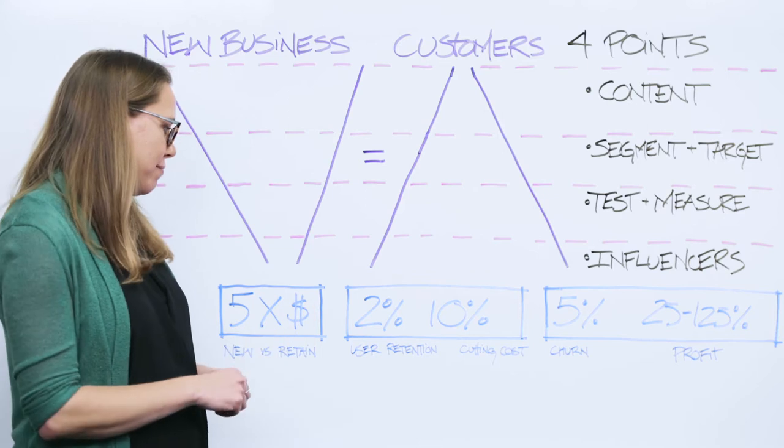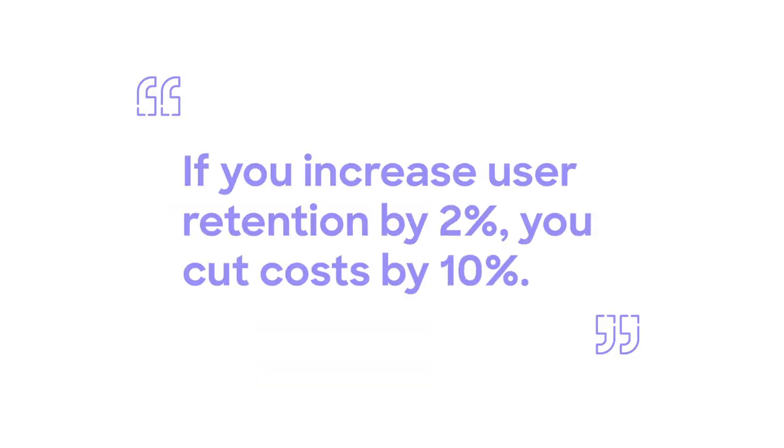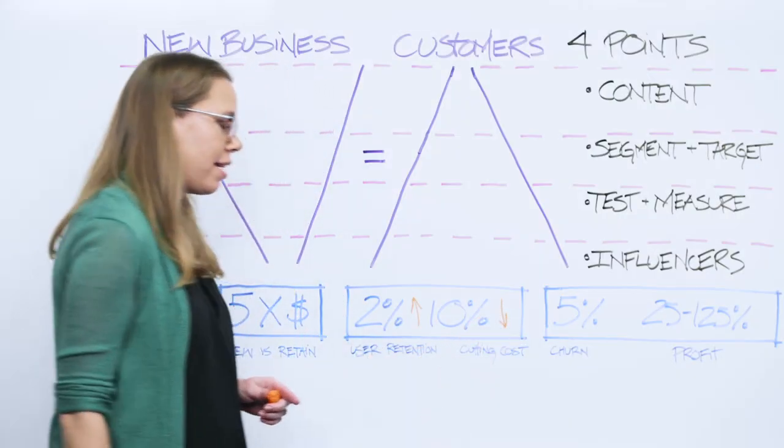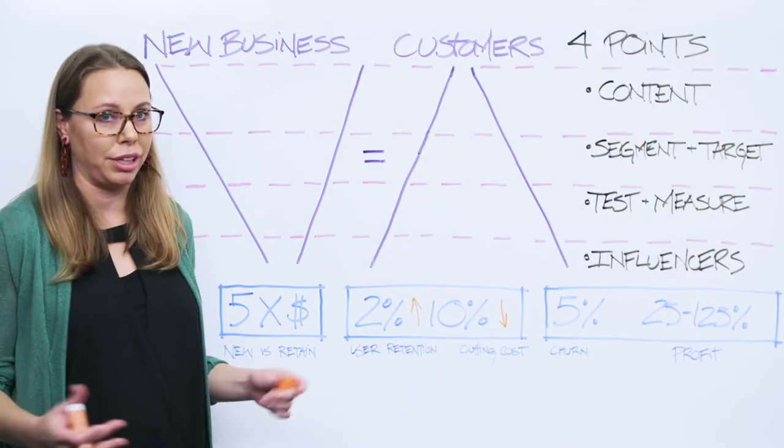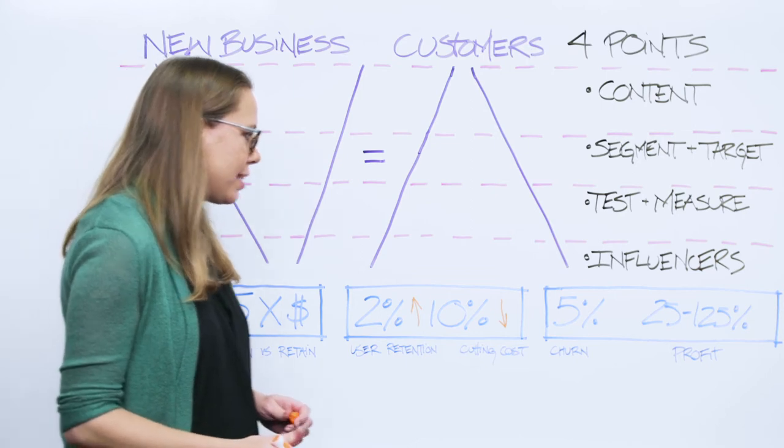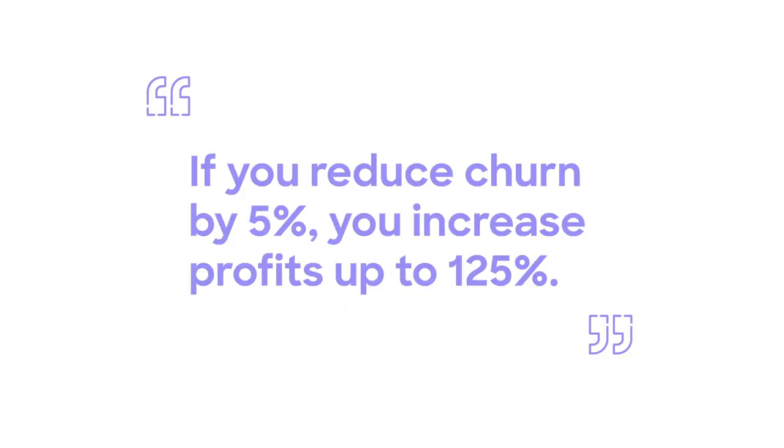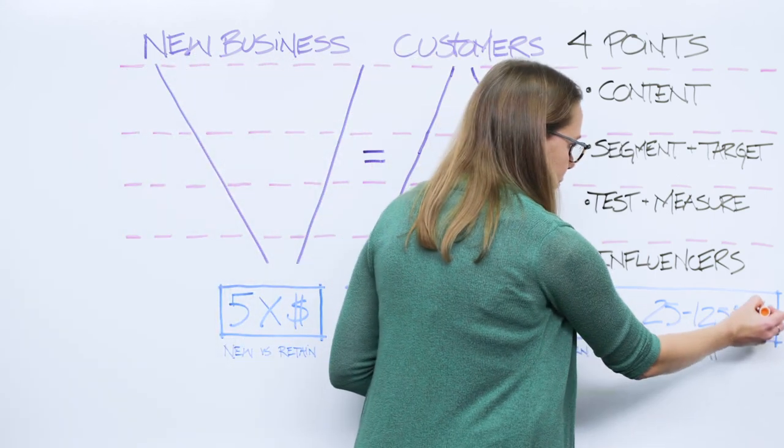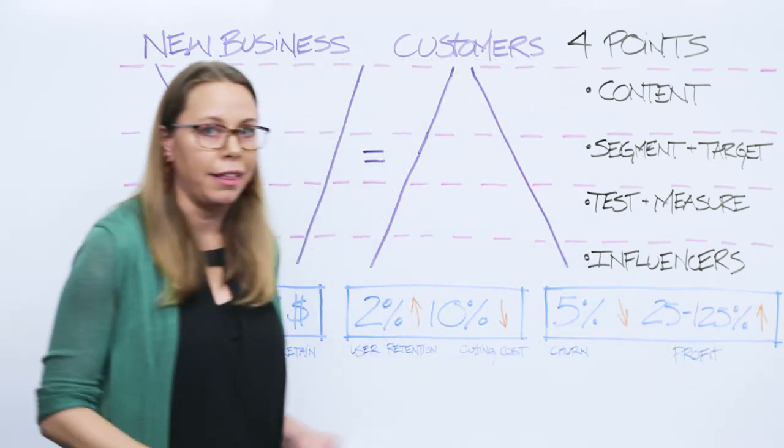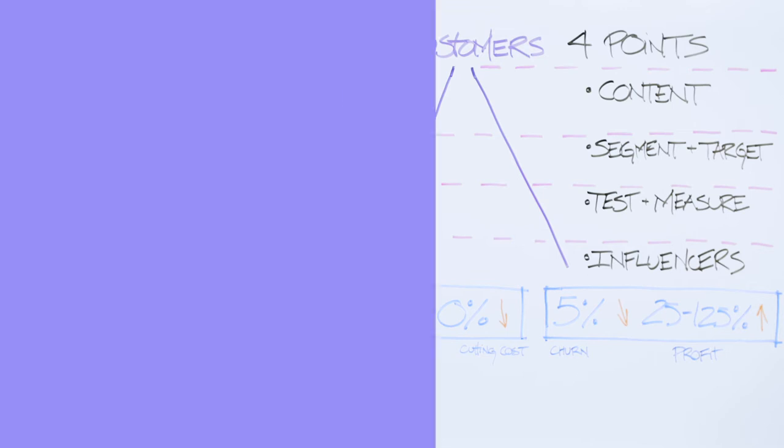Next stat is that if you increase user retention by 2%, that means that you can actually cut your costs by 10% at the end of the day. That's a pretty big deal for your ROI. And lastly, if you reduce churn by 5%, you can actually see an increase in profits from 25% to 125%. That's some bling bling right there for your business.